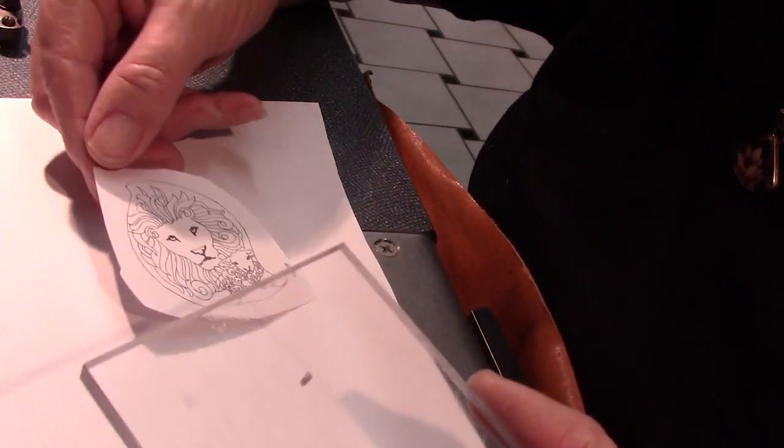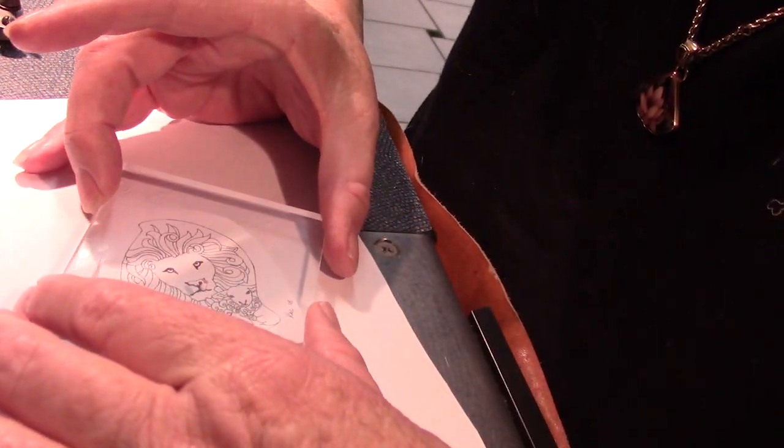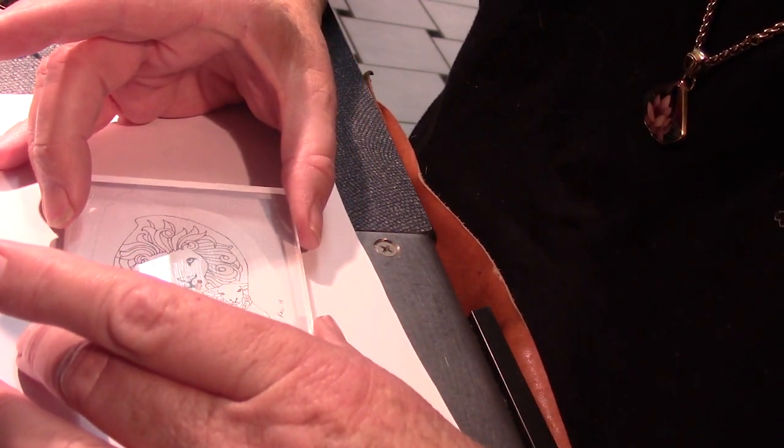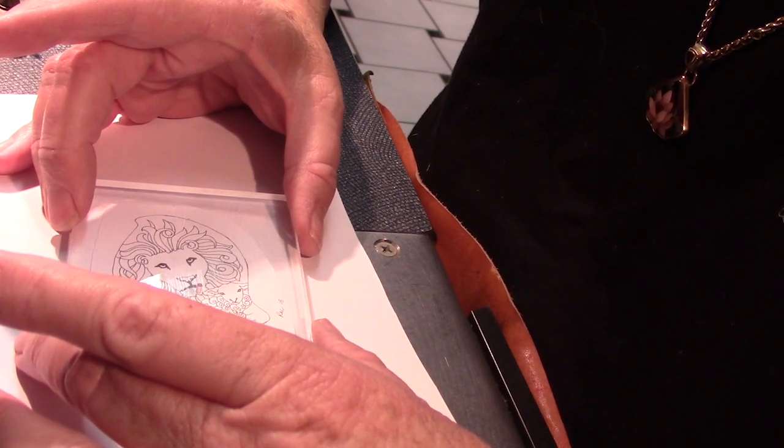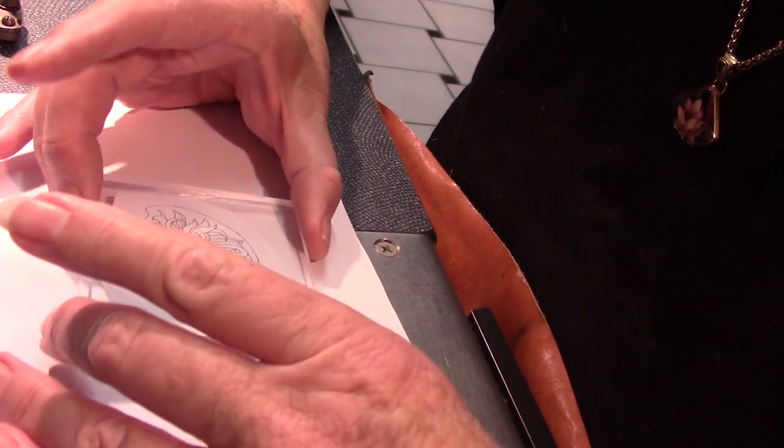My rubber cement is dry and now I am going to position this in the middle of the piece of plexiglass so that it has a nice surrounding all the way around.